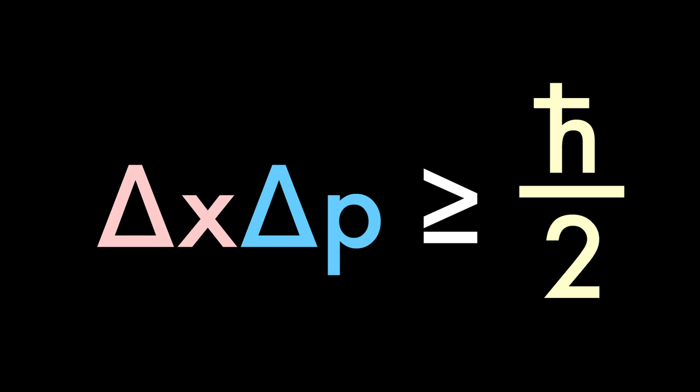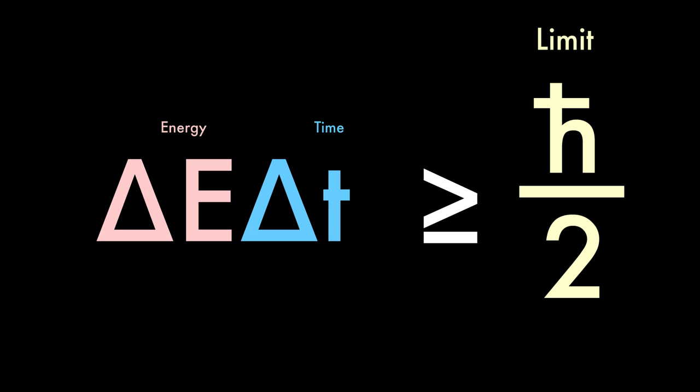The Heisenberg uncertainty principle states that knowledge of two related variables, such as momentum and position, is limited. A version of the uncertainty principle relates energy and time, where the information for both is limited.